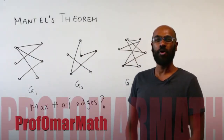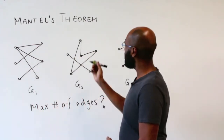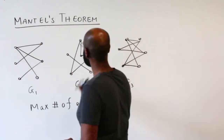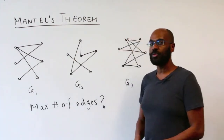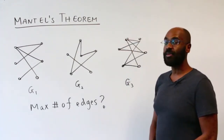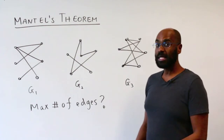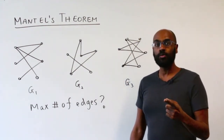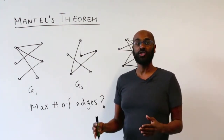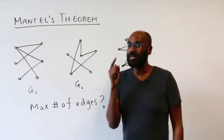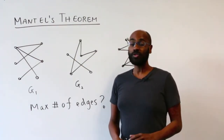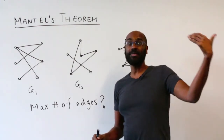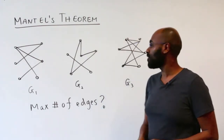Welcome to today's video. I'm Prof Omar, and today we're going to discuss Mantel's theorem. It's a theorem about graphs that gives us an upper bound on the number of edges we can pack in if we don't have a three-cycle in the graph. We're going to give two proofs: the first uses a standard induction argument, but the second is really special and uses a mathematical tool that comes out of seemingly nowhere to solve this problem.